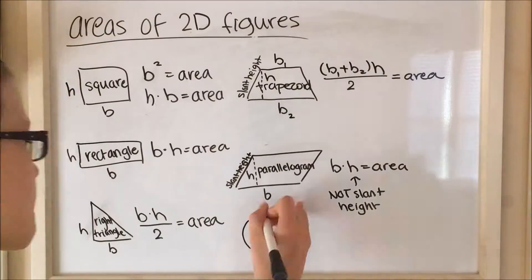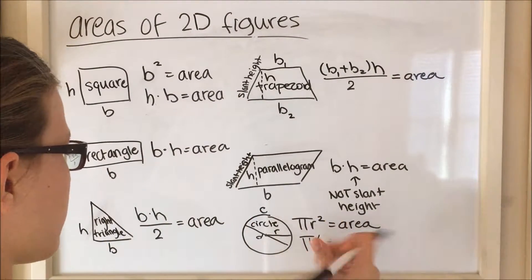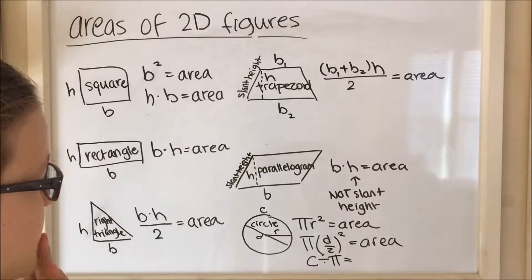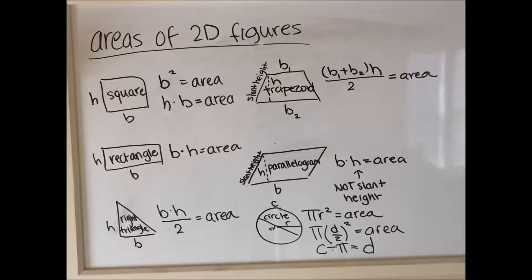For the circle, the area is basically πr². You can also find the radius by dividing the diameter by 2, so it's π times (diameter divided by 2) squared. And to find the diameter you can also divide the circumference by π.